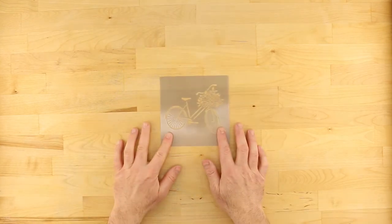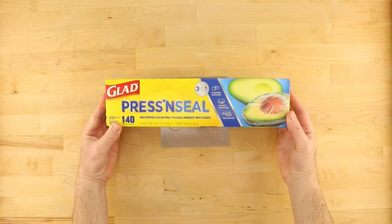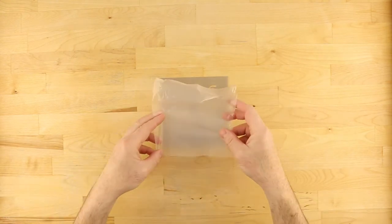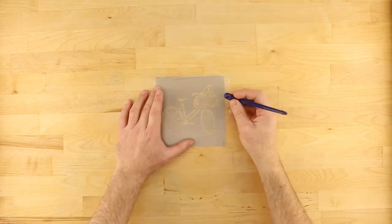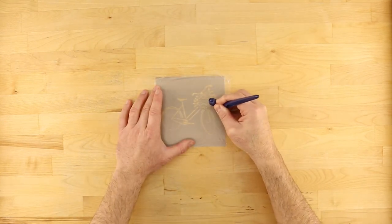For the more intricate design of the second stencil, use Glad Press and Seal to mask off individual design elements. After cutting an appropriately sized piece, place the Press and Seal onto the stencil and press lightly to remove any bubbles or wrinkles.